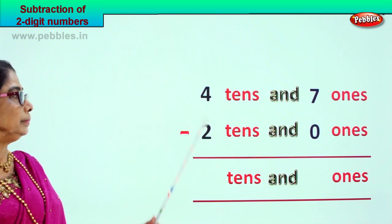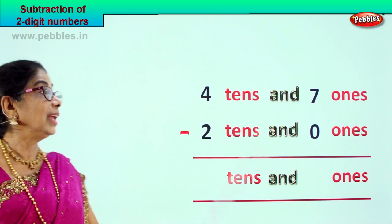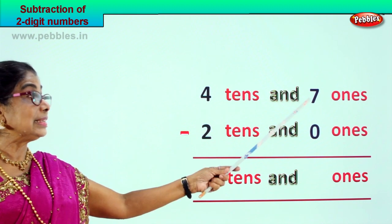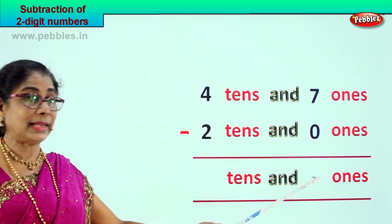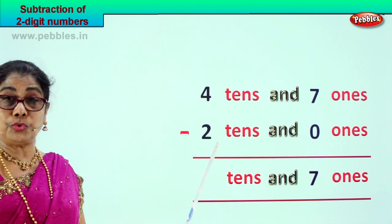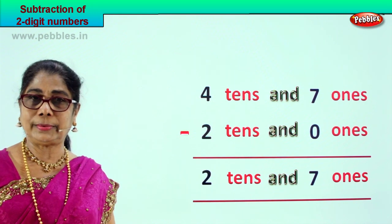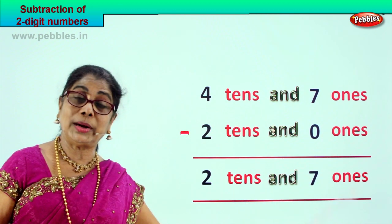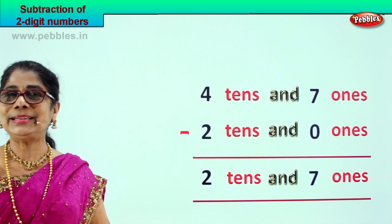Let's go to a new sum now. 4 tens and 7 ones minus 2 tens and 0 ones. 47 minus 20. We will go to the ones and minus first — 7 ones minus 0: 7 take away 0 is 7 itself. Here 4 take away 2 — 4 minus 2 is 2. Your answer is 2 tens and 7 ones. 4 tens and 7 ones minus 2 tens and 0 ones gives you 2 tens and 7 ones. Did you enjoy the 2 digit subtraction sums?